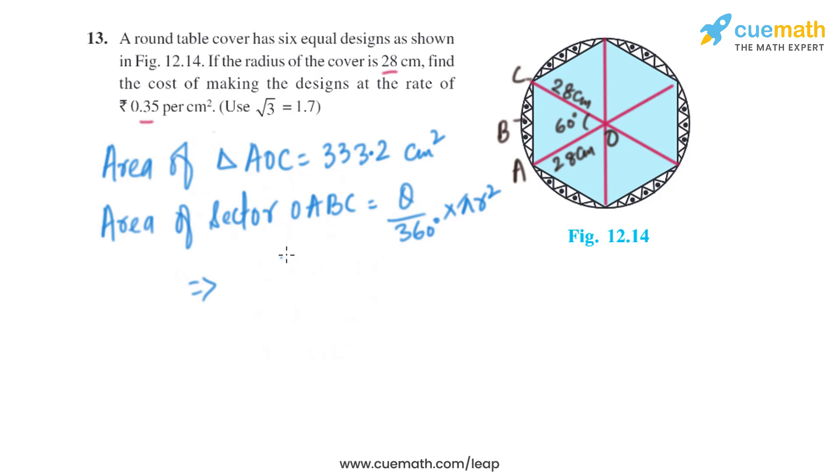Now let's find the area of sector OABC. That is theta divided by 360 degrees multiplied by pi r squared. So it will be 60 degrees divided by 360 degrees multiplied by 22 by 7, and the radius is 28, so it will be the square of 28.